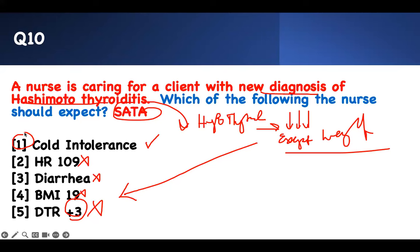Next generation NCLEX tip: never pick more than you can confirm. In select-all-that-apply, if they give you four or five answers and you only know one is right, be 100% confident. Don't pick an answer you're only 98% sure of. You're better off having one correct answer and moving on — because if a wrong answer cancels your right answer, you lose more points.